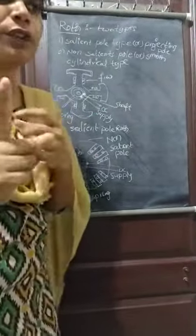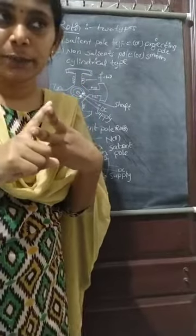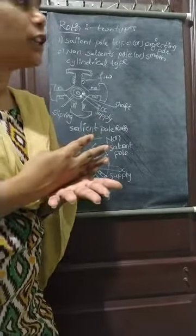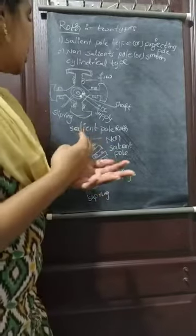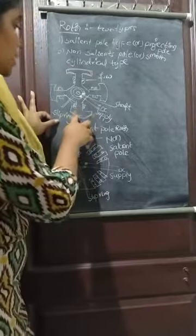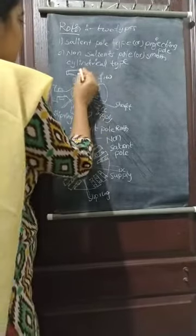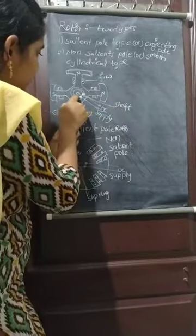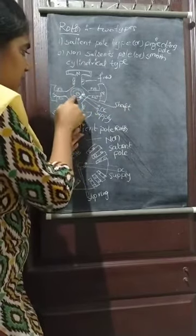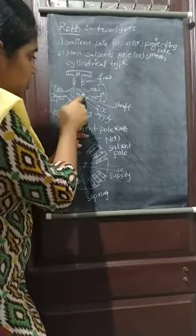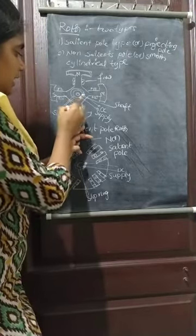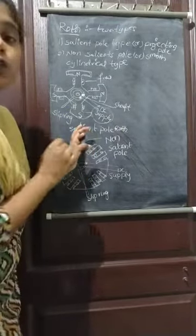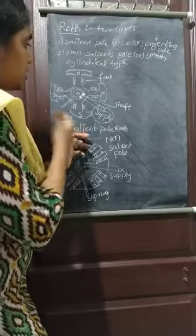The rotating part is the field winding. In the rotor, we have two types: first is the salient pole and second is the non-salient pole. The salient pole has projecting poles, while the non-salient pole is of smooth cylindrical type. The rotor's north pole slab is on the surface, and the slip ring provides DC supply to the rotor.